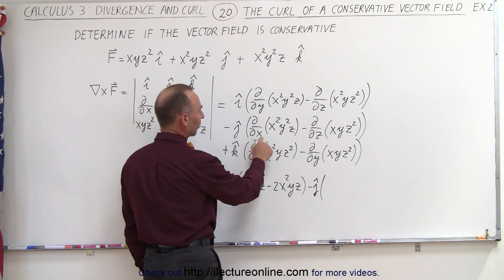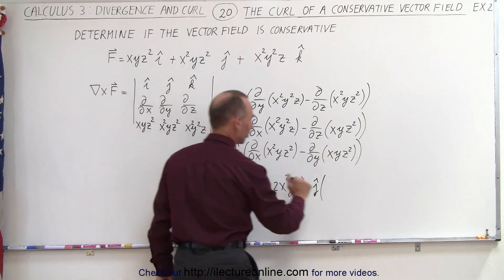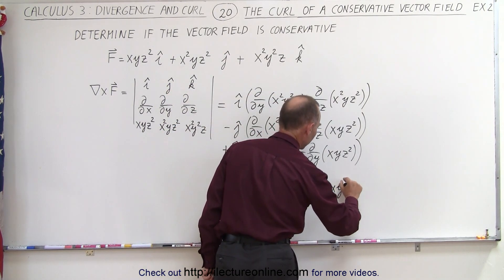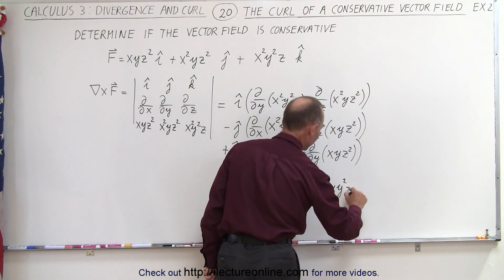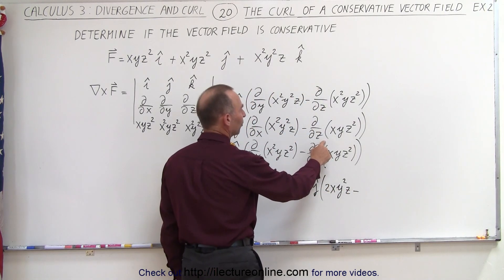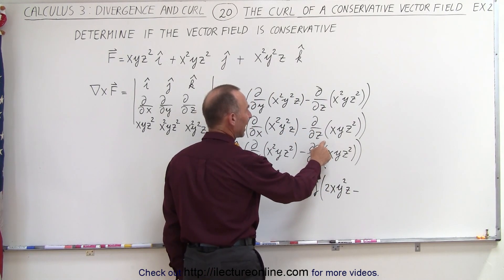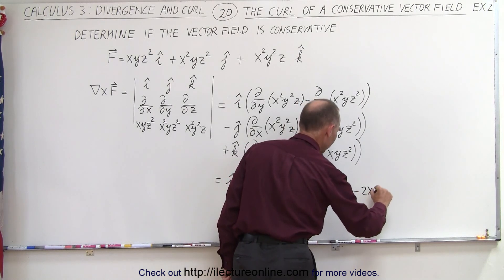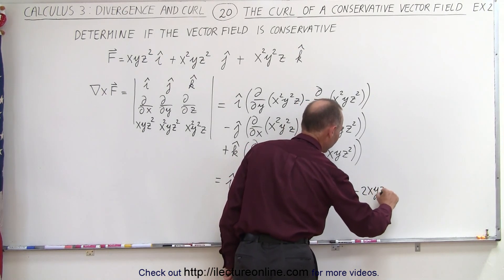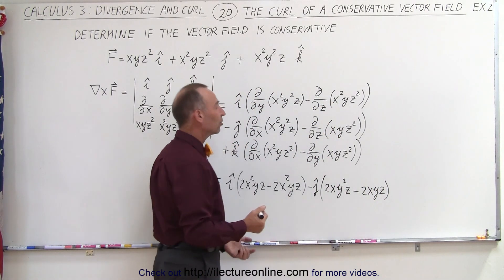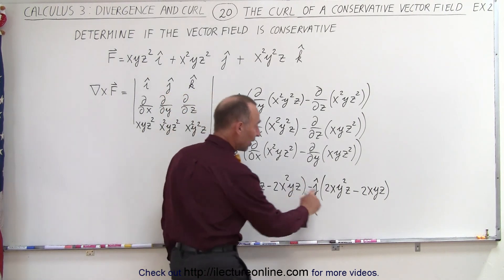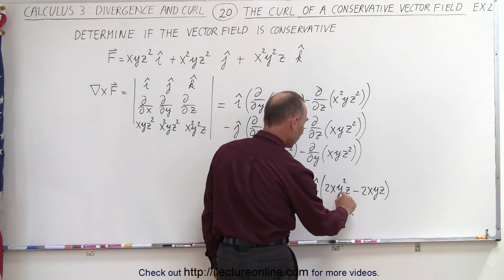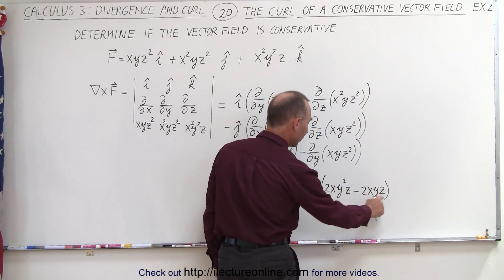Minus the j direction: with respect to x that's 2xy²z, minus with respect to z that would be 2xyz. We can already stop here because this does not equal zero — it does not cancel out because here we have y² and there we have y.